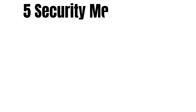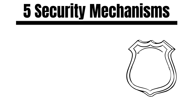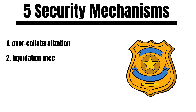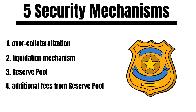Let us talk about the security mechanisms of the Inter Protocol. The Inter Protocol prevents de-pegging by five mechanisms. The first line of defense is over-collateralization. The Inter Protocol will liquidate vault collateral if vaults drop below the liquidation threshold. If this does not help, the reserve pool is used to cover any remaining shortfall. If a shortfall still remains, additional fees from the reserve pool are used to cover the outstanding debt. And if this also does not achieve the desired goal, the Builder DAO can vote to issue more BLD.